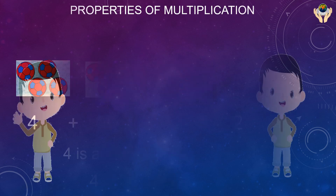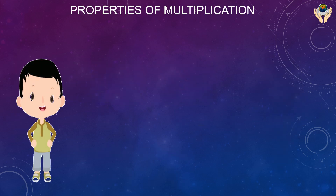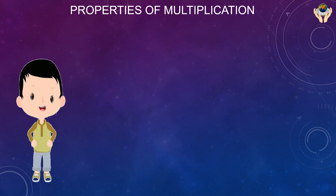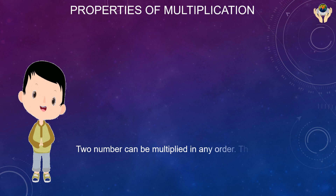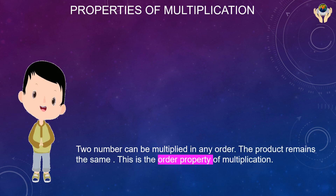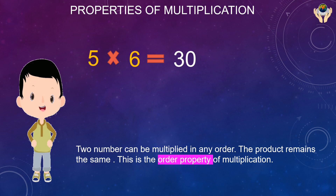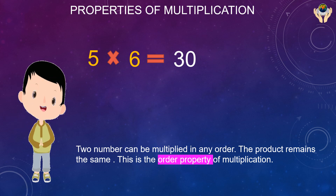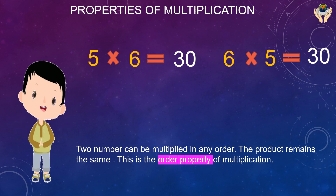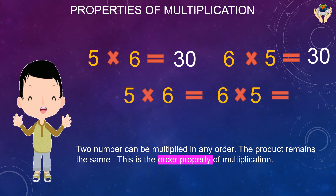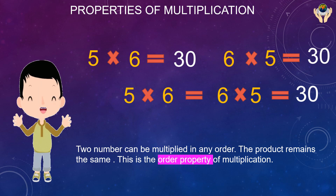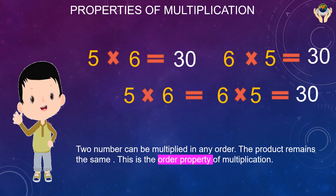Now we are going to see the properties of multiplication. Two numbers can be multiplied in any order. Five multiplied by six equals 30, and six multiplied by five also equals 30 — the products remain the same. This is the order property of multiplication.